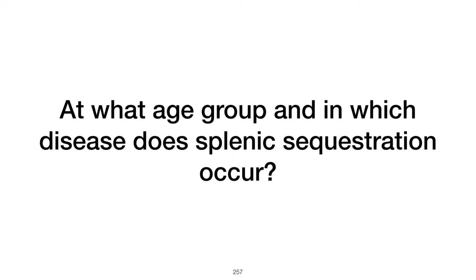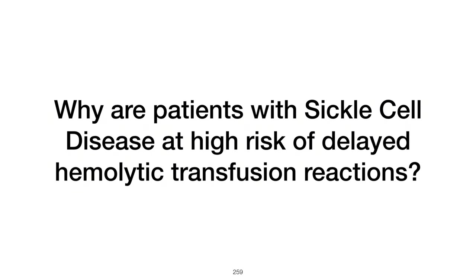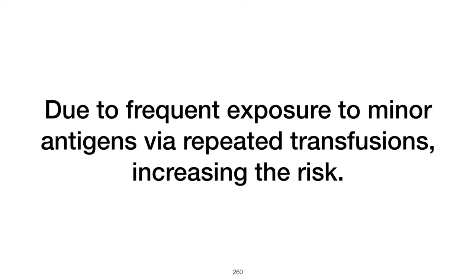What age group and disease does splenic sequestration occur in? Splenic sequestration occurs in young children with sickle cell disease, causing splenomegaly and a rapid drop in hemoglobin with compensatory reticulocytosis. Why are sickle cell disease patients at high risk of delayed hemolytic transfusion reactions? Patients with sickle cell disease are at high risk due to frequent exposure to minor antigens via repeated transfusions, leading to an immune response against transfused red blood cells.